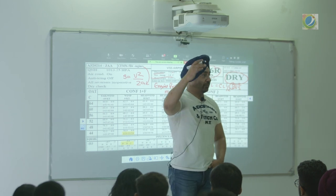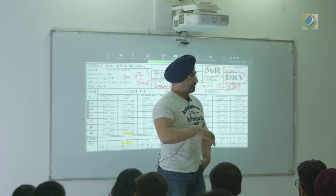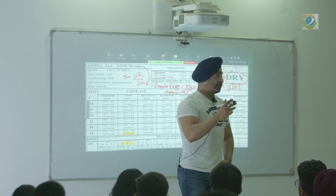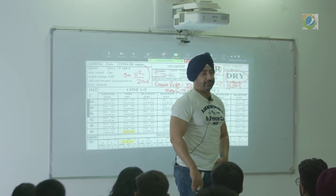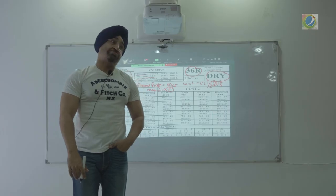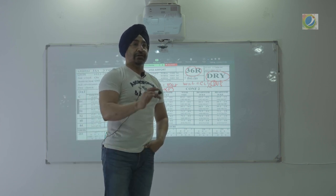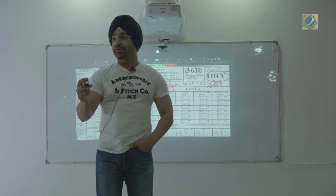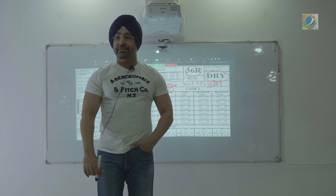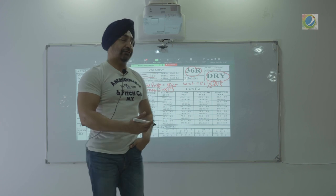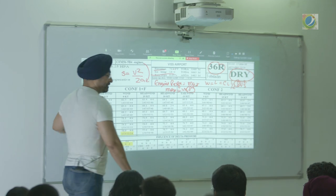Higher you are, the lower the density. Taking off from Delhi versus taking off from Shimla — the density is less at Shimla. The same engine gives you less thrust there. So what happens to runway length required, if everything else is kept the same? The logic is very simple: hot, high, humid — more humidity, less density; more temperature, less density. All these charts are factored for a certain temperature, and when the temperature changes you apply a correction.